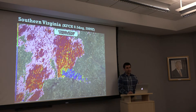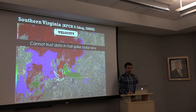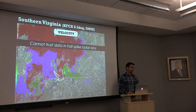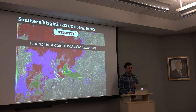Those are really low correlation coefficient values — 0.7, 0.6, even lower — a big thumbs down on our data quality. That's what we see in our three-body scatter spike: that low correlation coefficient value. That tells us what we're looking at is not meteorological. Going back to velocity, those inbound values are in an area where we have that low correlation coefficient due to the three-body scatter spike. We can't trust the data in those hail spike radar bins, so we have to discard that inbound arrow. The very low correlation coefficient on the backside of our big hail core — relative to the radar — tells us to toss those data out.